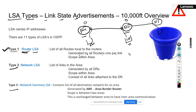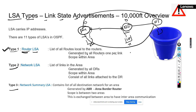Router LSAs are generated by routers, one per link. These LSAs' scope is within one area only. My IPs cannot go beyond area 0, or area 1, or whichever area I am generating it in — the scope is within the area. So if you have C routers, that will be C Router LSAs. If you have 10 routers, then 10 Router LSAs.